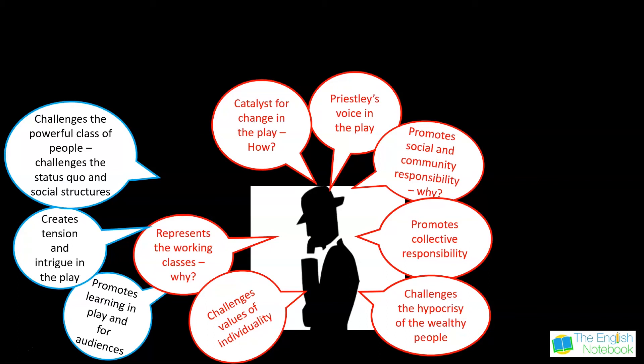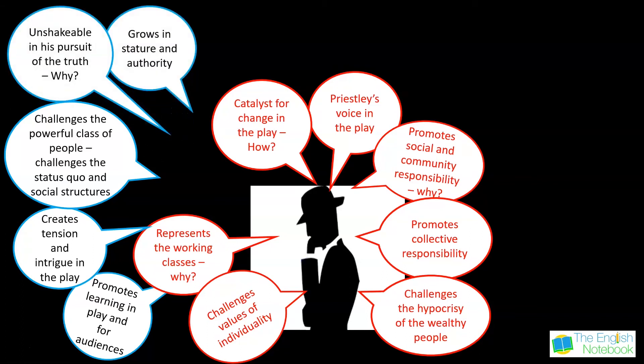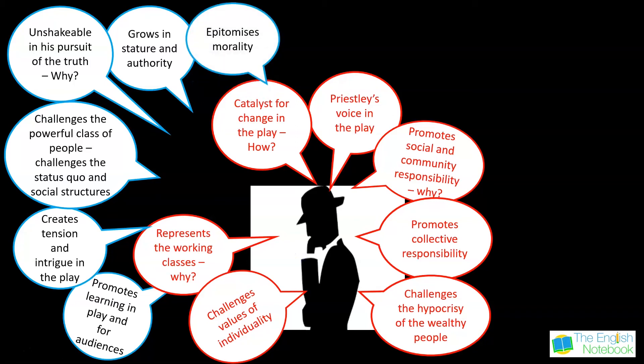He really challenges the power, control, and value system that the upper classes had at that time. In his line of questioning, he has an unshakable attitude and approach in his pursuit of the truth, because he wants to show the Birlings that their power and self-importance are of no consequence to him when it comes to Eva Smith.